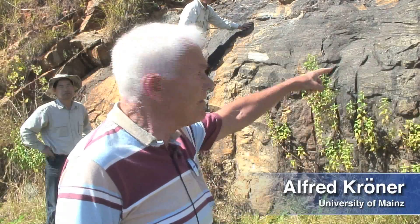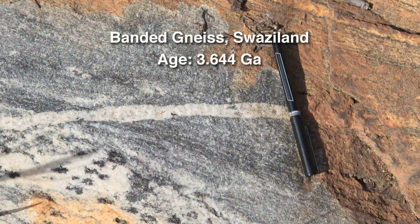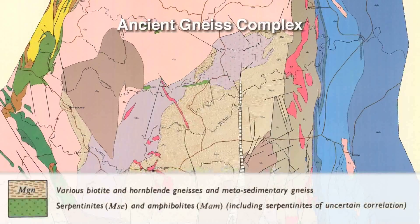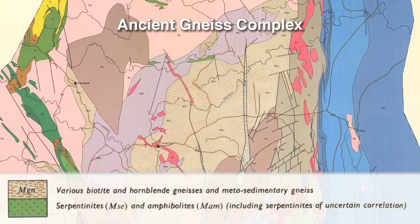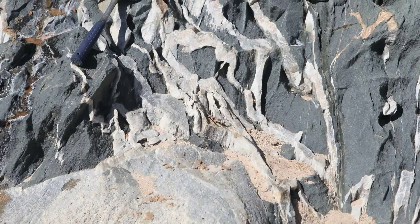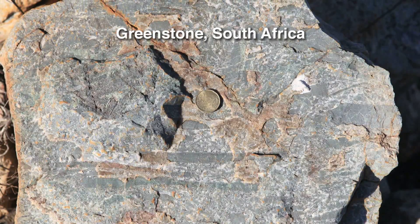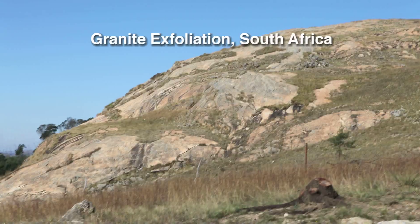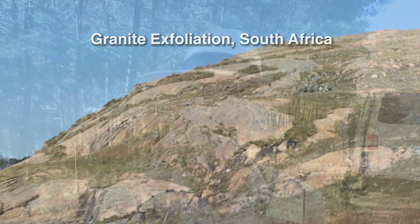Here we are at a location just north of the town of Pig's Peak in Swaziland, where we have a banded gneiss dated at 3.644 billion years — currently the oldest rock in the African continent. It's part of the ancient gneiss complex and is intruded by granite veins which are themselves 3.1 billion years old. We're continuing to look at the greenstone belts and various rocks associated with these ancient Archean formations, all somewhere between 3 and 3.5 billion years old.